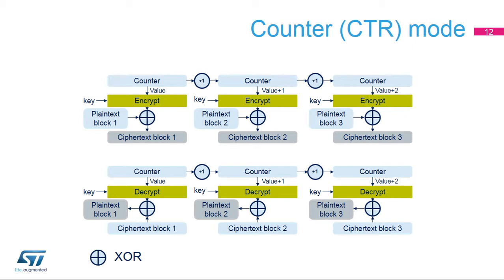The counter mode, known as CTR mode, uses the AES core to generate a key stream. The keys are then XORed with the plain text to obtain the ciphertext. Unlike ECB and CBC modes, no key scheduling is required for the CTR decryption, since in this chaining scheme the AES core is always used in encryption mode for producing the key stream or counter blocks.